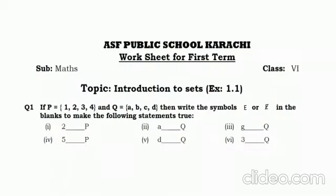Students, now I am going to start Exercise 1.1. Question number 1: the elements of set P are 1, 2, 3, 4 and the elements of set Q are A, B, C, D. Fill in the blanks: (1) 2 belongs to set P; (2) A belongs to set Q; (3) G does not belong to set Q; (4) 5 does not belong to set P; (5) D belongs to set Q; (6) 3 does not belong to set Q.